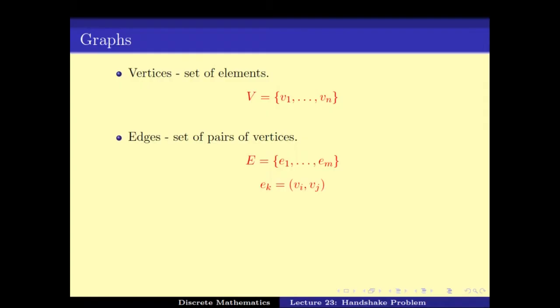The edges E1 to Em are pairs of the form Vi, Vj — some particular pairs of vertices contribute to the edges. The graph is given as V, E — the vertex set and the edge set — and we usually denote it as G equals V, E.